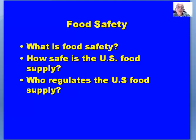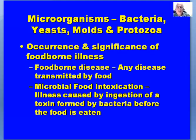We're going to look at bacteria, yeast, molds, and protozoa — their occurrence and significance in foodborne illness. There are some terms that if you've taken food microbiology you may just need to review. Foodborne diseases are any disease transmitted through food — this includes not only microorganisms but chemicals and physical hazards as well. These can include foodborne toxins, heavy metals that might be in or on the food product, and pesticide residues above the tolerance approved by the EPA.